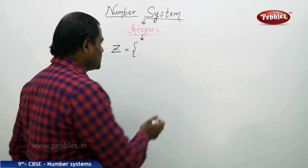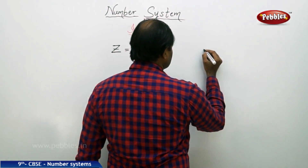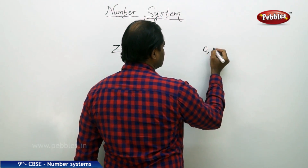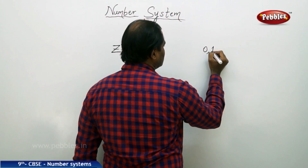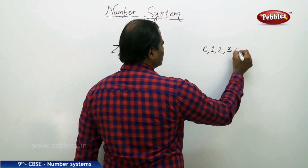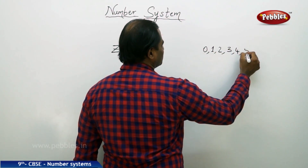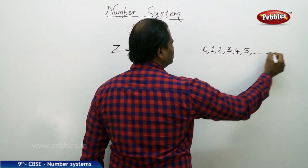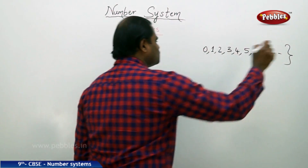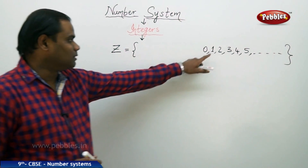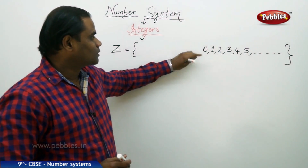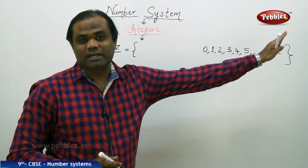For example, starting with the positive side, we know that the whole numbers are 0, 1, 2, 3, 4, 5, and so on up to infinity. This is what we understand as the natural numbers, or the whole numbers with 0 added, on the positive side.